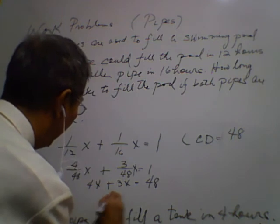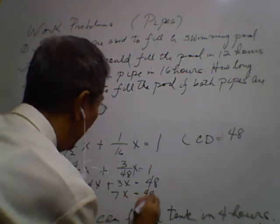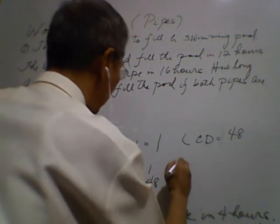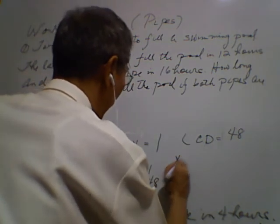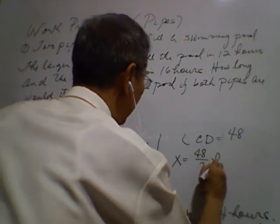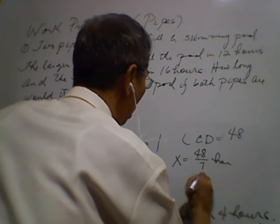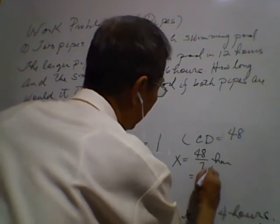So 7x is equal to 48 and our answer for this particular problem is x is equal to 48 over 7 hours or it's equal to 6 and 6/7 hours.